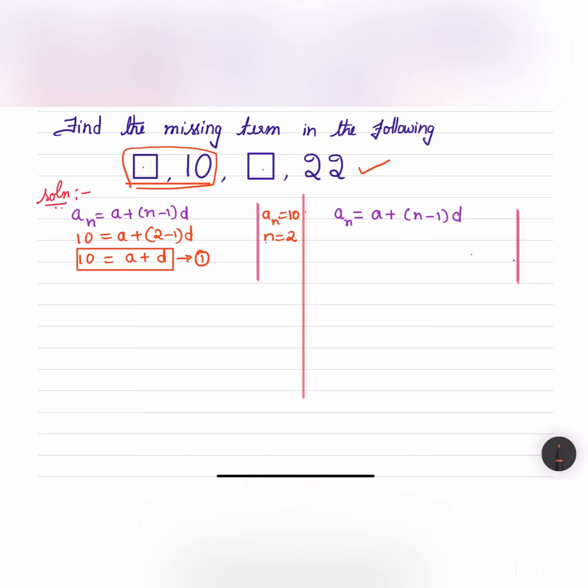Let me take it as equation 1 and next let us take all the four terms and a_n in this case will be equal to 22 and we have the number of terms is equal to four terms. Let us substitute that in this a_n is equal to a plus (n minus 1) into d and we are getting the second equation. n is here 4 minus 1 into d. 22 is equal to a plus 3d. This is the second equation. Let us solve for a and d so that we can get the first and the third terms.